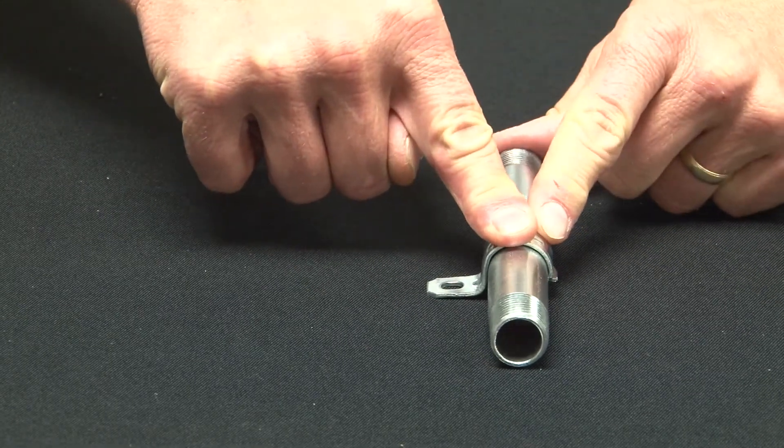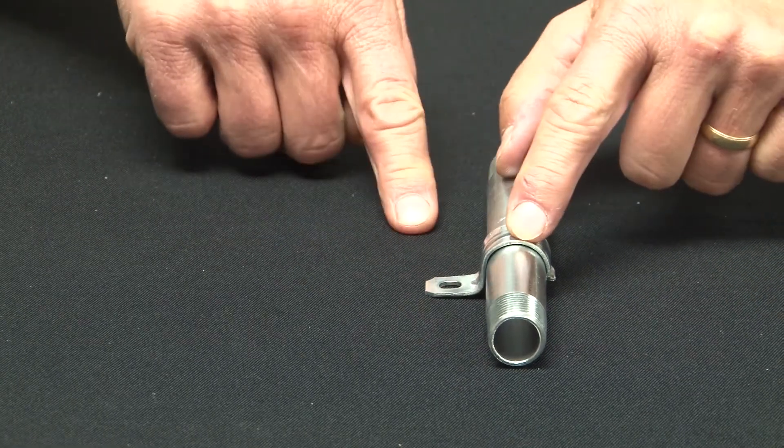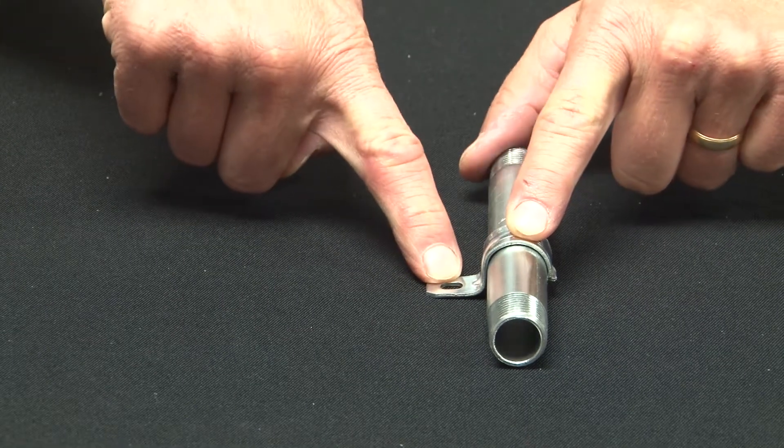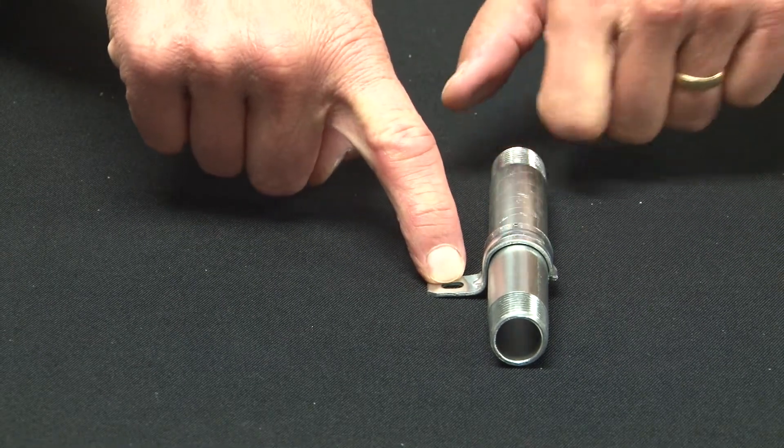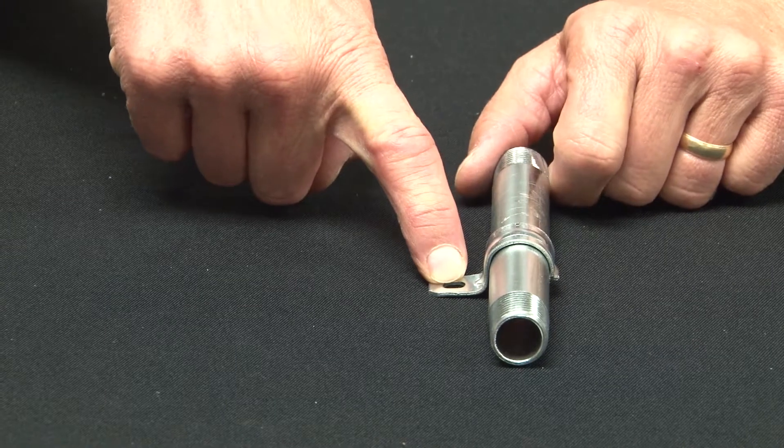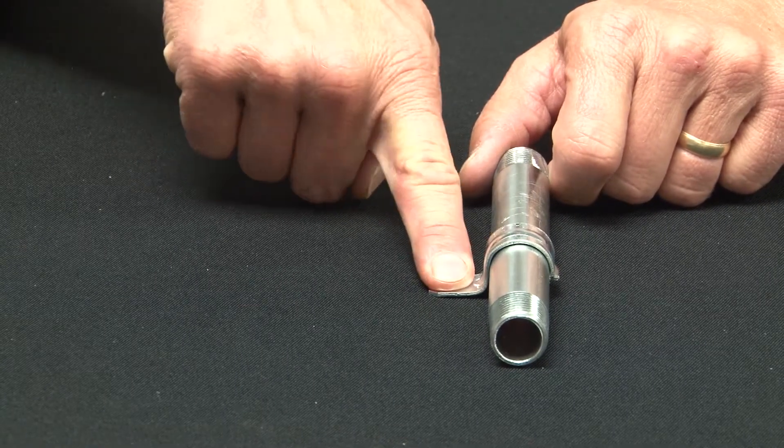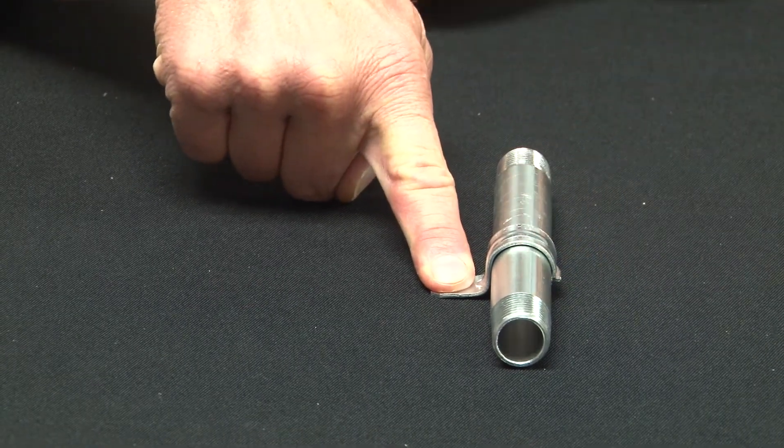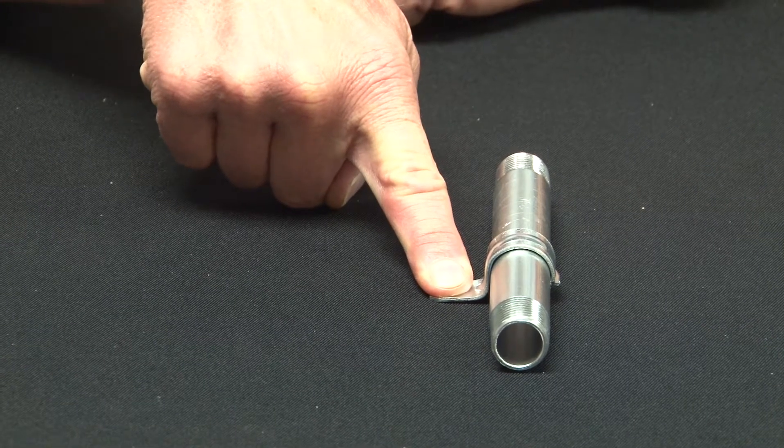When it snaps down, it's got a nice tight secure fit to the back wall. You then drill out your mounting hole and use a Tapcon or other appropriate fastener to anchor the one-hole strap and hold it against the wall or other finished surfaces.